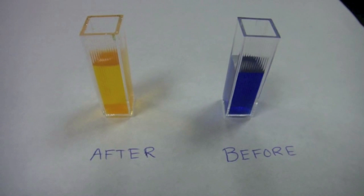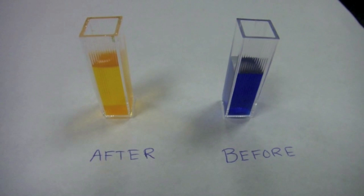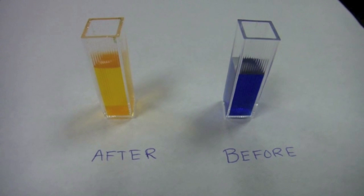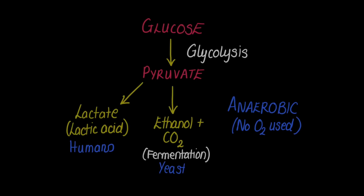Fermentation, otherwise known as anaerobic respiration. In summary, anaerobic respiration in yeast involves first the breakdown of glucose into pyruvate — that was part of glycolysis — and then producing ethanol and carbon dioxide.